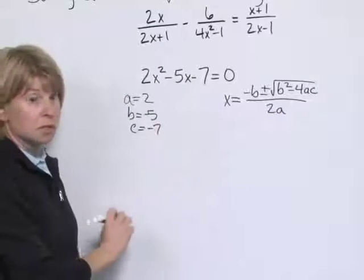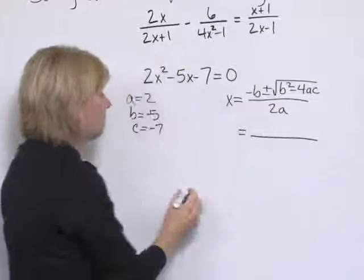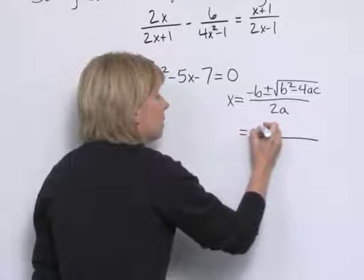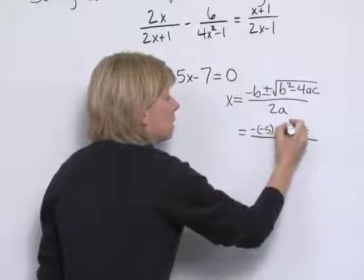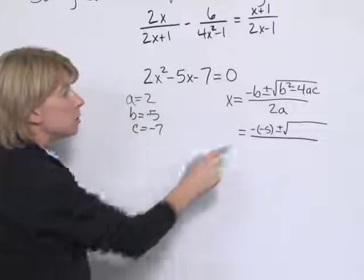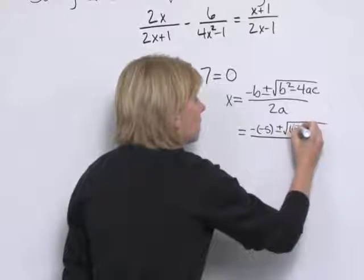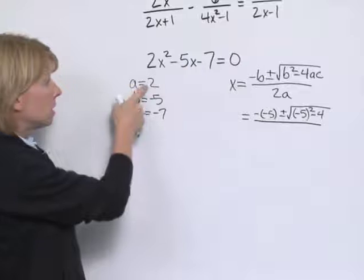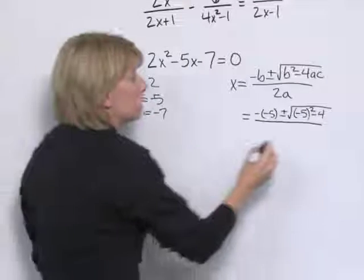Substituting these values into the formula, we have negative b. b is negative 5, plus or minus. Under the square root we have b squared, so negative 5 squared, minus 4 times a is 2, times c is negative 7.